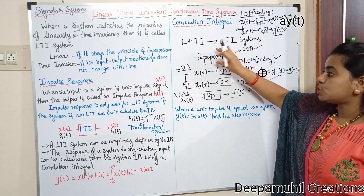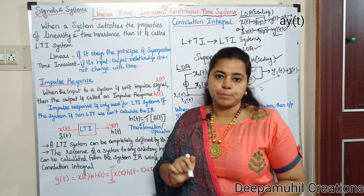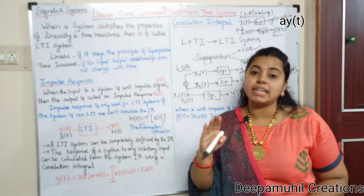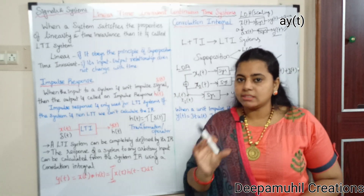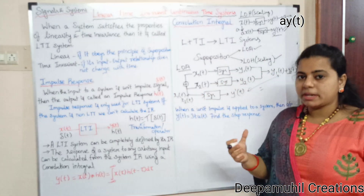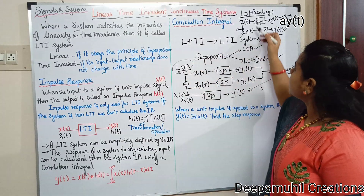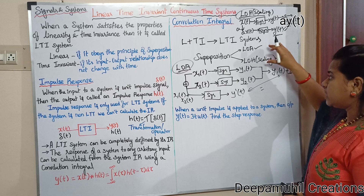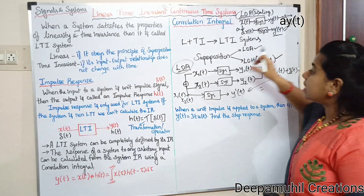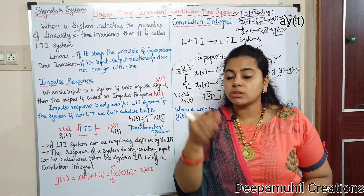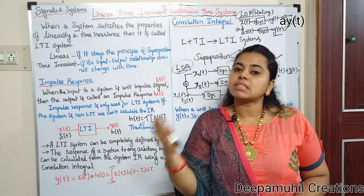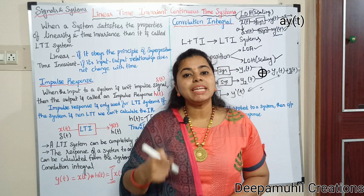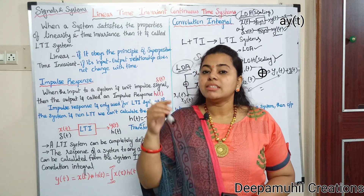Any system that satisfies the Superposition principle is a Linear System. If both laws — Additivity and Homogeneity — are satisfied, the system is linear. If only one is satisfied, it is not a linear system. To find whether a system is linear or non-linear, you can refer to part 11 of the signals and systems playlist. If a system involves a square or scaling operation, check carefully.